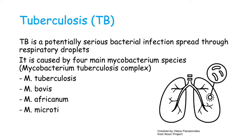TB is a potentially serious bacterial infection spread through respiratory droplets. It is caused by four main mycobacterium species: Mycobacterium tuberculosis, Mycobacterium bovis, Mycobacterium africanum, and Mycobacterium microti. These four together form the Mycobacterium tuberculosis complex. The main causative agent of TB in humans is Mycobacterium tuberculosis, and the other three are said to cause TB-like infections.